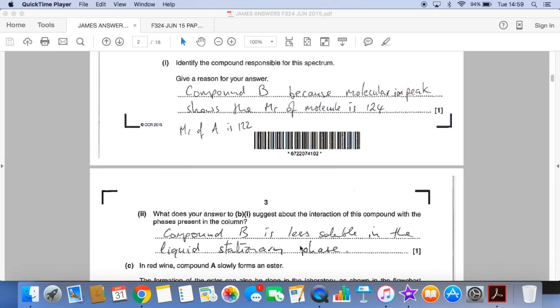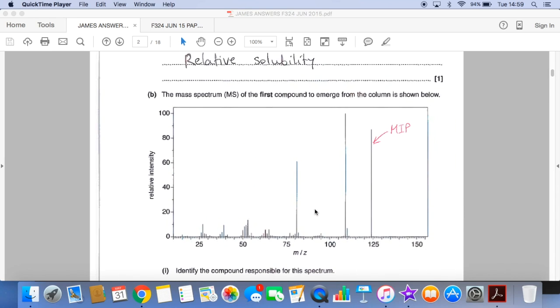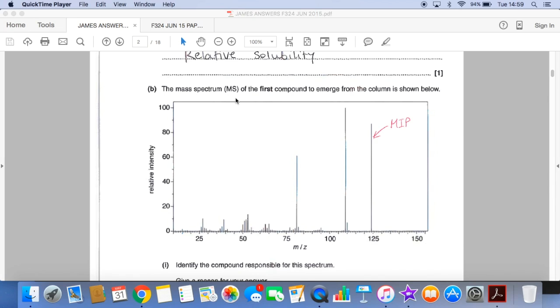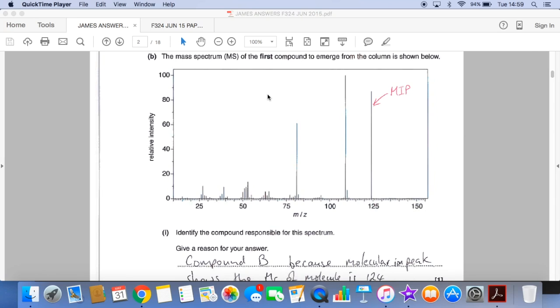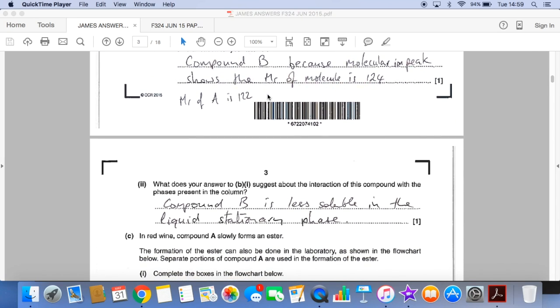What does your answer to BI suggest about the interaction of this compound with the phases in the column? So we'll just go back to the information in the question. This is the mass spectrum of the first compound to emerge. So it's coming through the fastest. And so it has the least interaction with the stationary phase. And so it's less soluble in that liquid stationary phase.